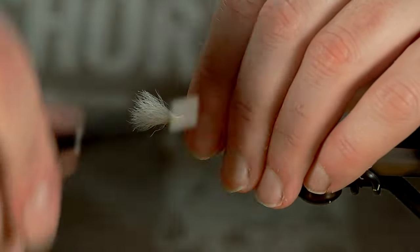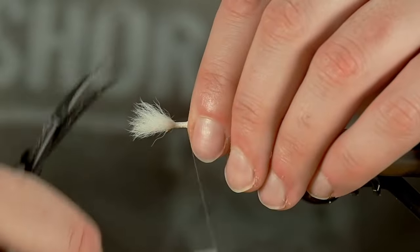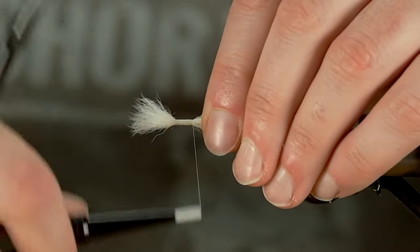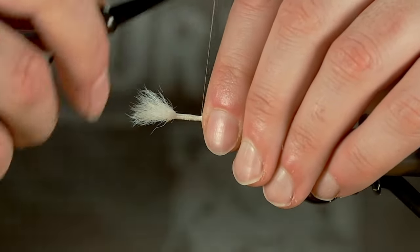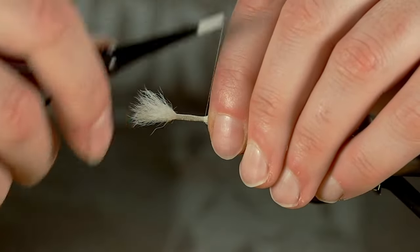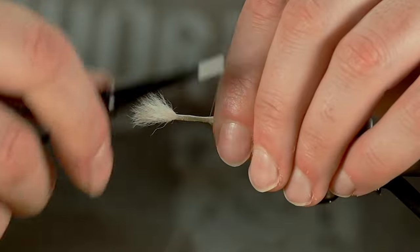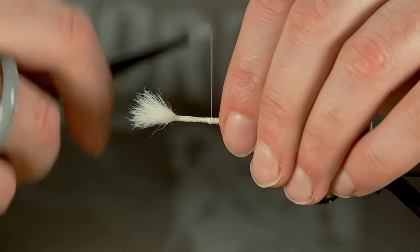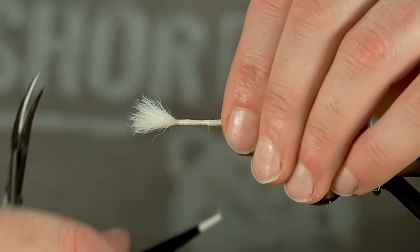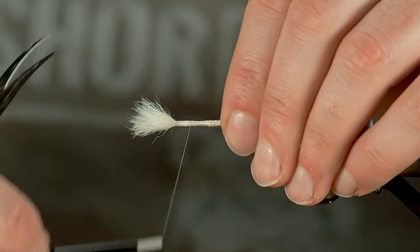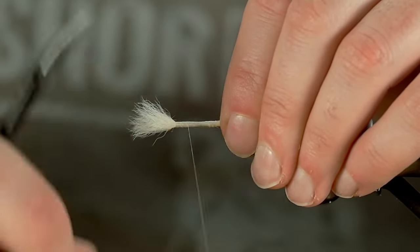And while I'm holding the cut end I start wrapping, and I'm just moving my fingers that are holding the calf tail down back as the thread gets closer. I got a bit of a bump there but that's okay. I'll come up and down again just to make sure it's all in there pretty secure.